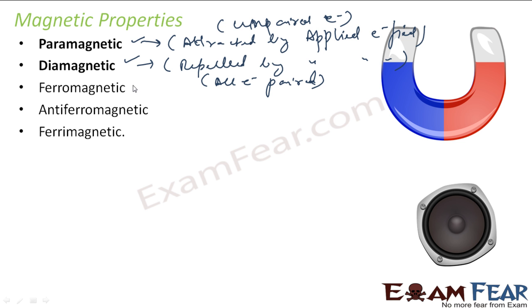There is something called ferromagnetic. Ferromagnetic is nothing but a glorified version of paramagnetic, where substances are very strongly attracted by the magnetic field and they have permanent magnetic moments. Ferromagnetism is an extreme case of paramagnetism. Many of the transition metals are paramagnetic because of the presence of unpaired electrons.